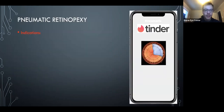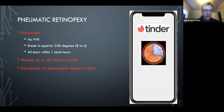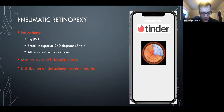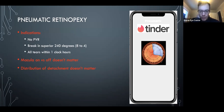Indications for pneumatic retinopexy: no PVR, the break has to be in the superior 240 degrees, and all breaks must be within one clock hour because you're treating them with a small gas bubble. Macula on or off doesn't matter, and distribution of the detachment doesn't matter — you're just treating the break; the subretinal fluid will resolve.